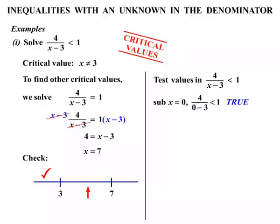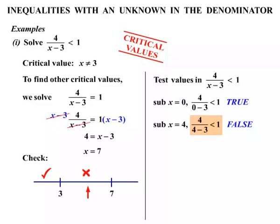Picking a number between 3 and 7, let's substitute x equals 4. We substitute x equals 4 and work that out — either in your head or with a calculator. We come up with a false statement, so on the number line we give it a cross.